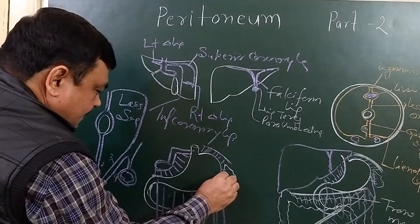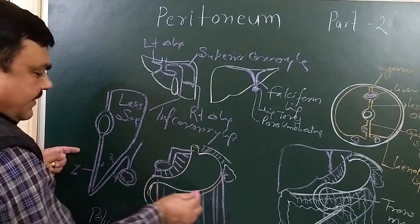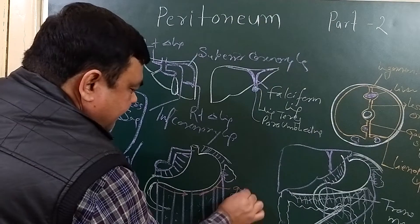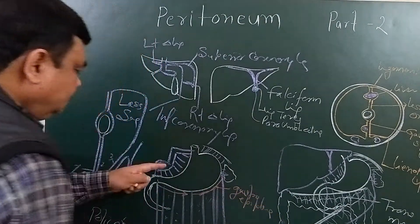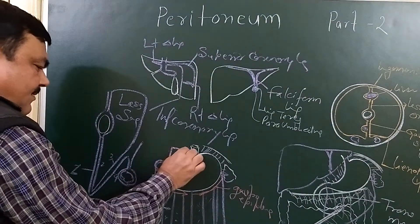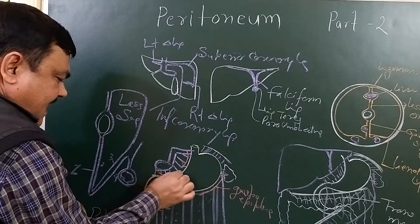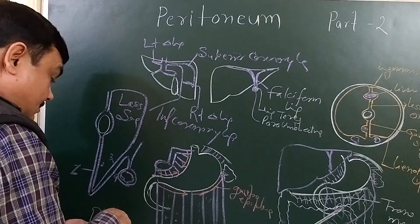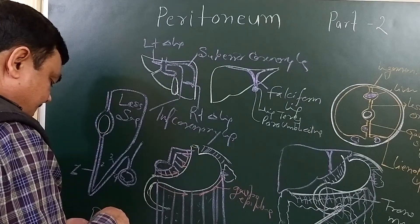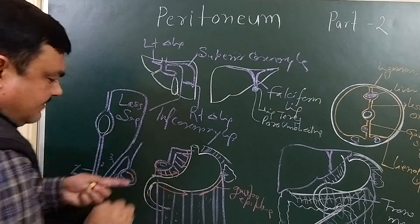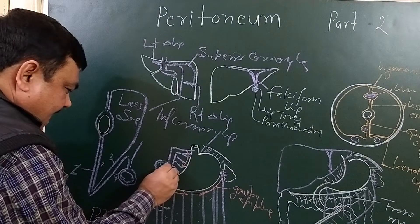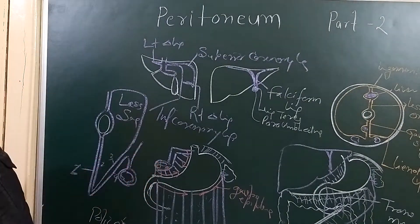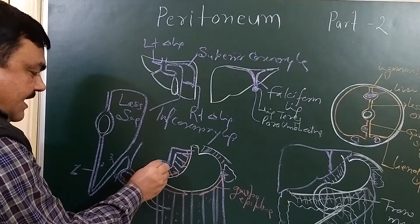The greater omentum contains, between the first and second layer, the right and left gastroepiploic arteries. In the lesser omentum there is the left gastric artery, the right gastric artery, lymphatics, and the right and left gastric veins. Here at the free margin of the lesser omentum are three structures: the portal vein, the hepatic artery, and the bile duct.